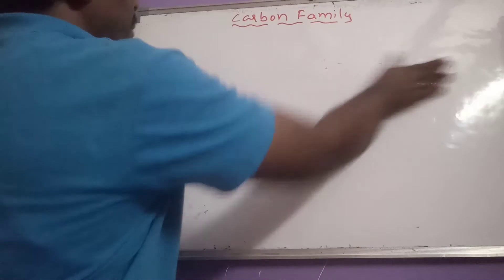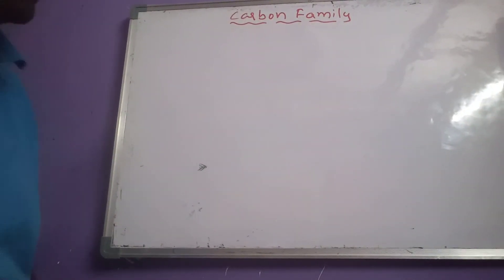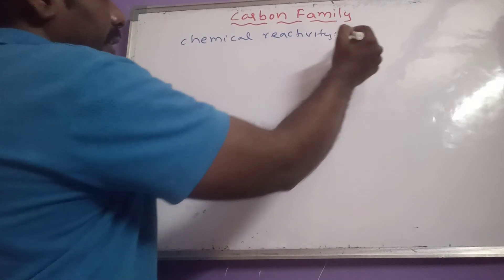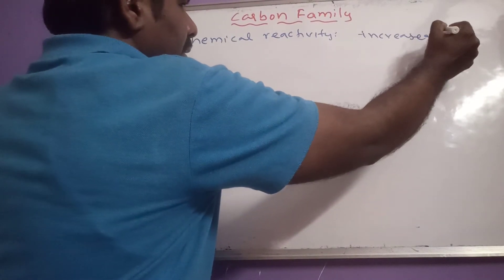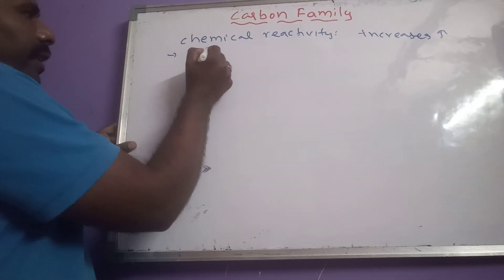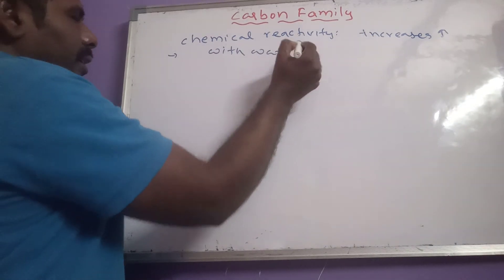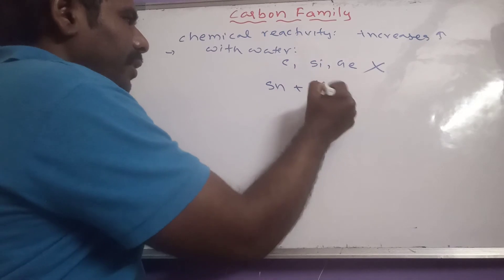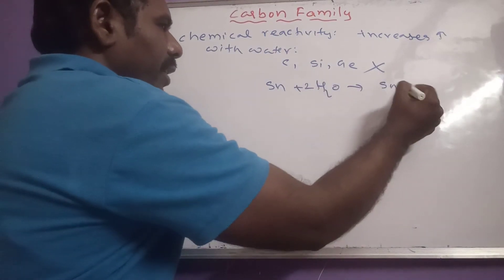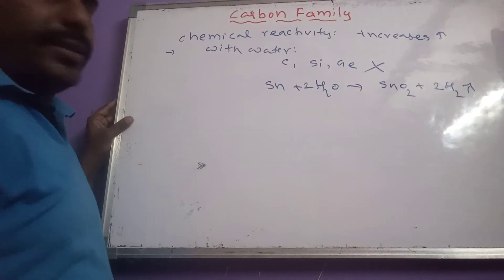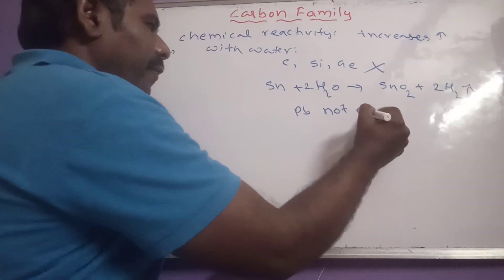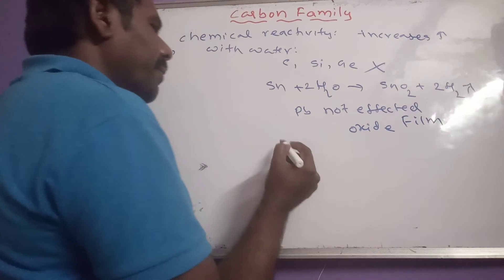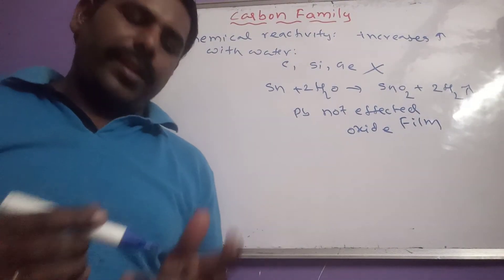Now let us see chemical reactivity. Chemical reactivity increases from top to bottom. Regarding reactivity with water: carbon, silicon, and germanium do not react with water. Tin reacts with water and forms SnO2 while liberating hydrogen gas. Lead is not affected by water due to the formation of an oxide film on its surface.